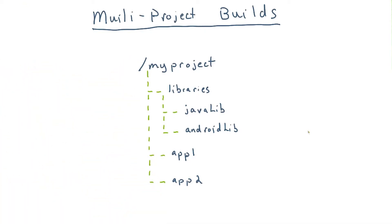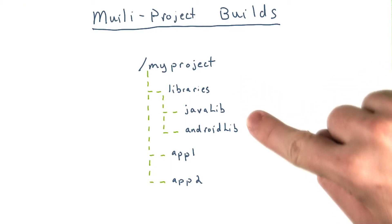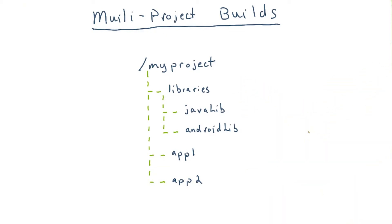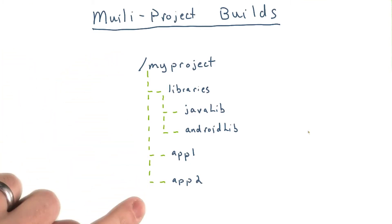You'll generally create a sub-project in order to move some reusable functionality into a library. That way the library can be used by other projects, and also so Gradle can determine that the library and the app that depends on it should be built together. A Gradle multi-project build is configured in a settings.gradle file in the root of your project.